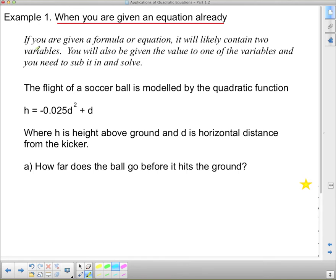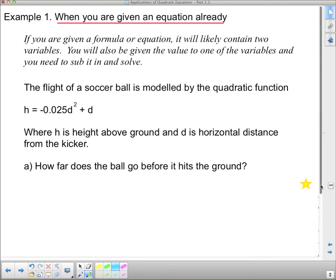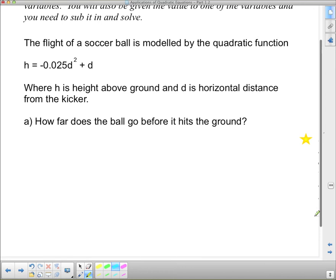So these are questions. If you are given a formula or equation, it will likely contain two variables. You will also be given the value of one of the variables, and you need to sub it in to solve. So we're going to start with the flight of a soccer ball as modeled by the quadratic function. Height equals negative 0.025d squared plus d, where h is the height above ground and d is the horizontal distance from the kicker. How far does the ball go before it hits the ground is our first question.